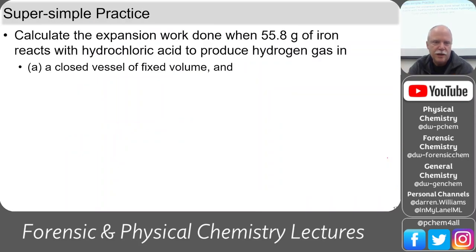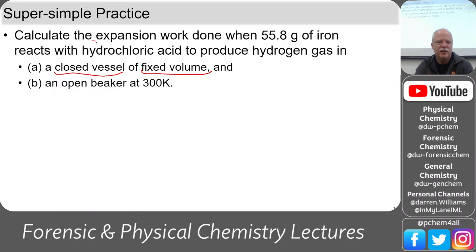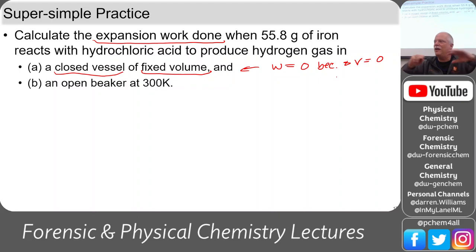Let's do a practice problem: calculate the expansion work when 55.8 grams of iron reacts with hydrochloric acid to produce hydrogen gas — first in a closed vessel of fixed volume, then in an open beaker at 300 Kelvin. This is a classic trick question. In the closed vessel of fixed volume, work equals zero because delta V equals zero. Recognize that condition: delta V is zero, so there's zero work and you don't even need to worry about how much iron or HCl you have.